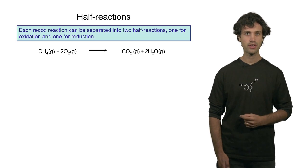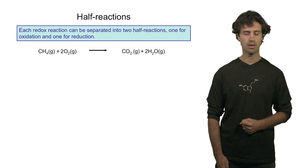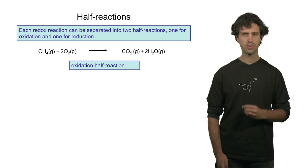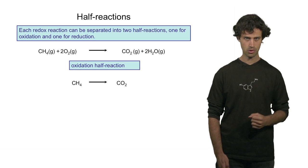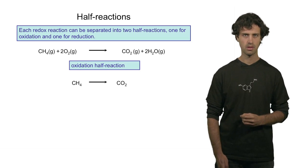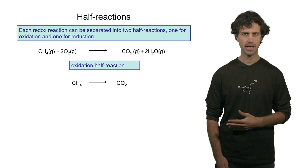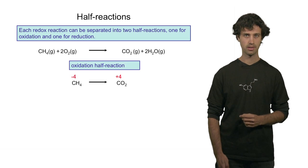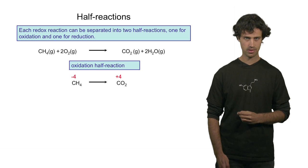Let us look at the combustion of methane once again. This is a redox reaction in which methane is reacting with oxygen to produce carbon dioxide and water. In this process, the methane molecule acts as a reducing agent, and methane becomes oxidized. We know that because the oxidation state of the carbon atom is changing from minus 4 to plus 4. In this process, it has lost 8 electrons.